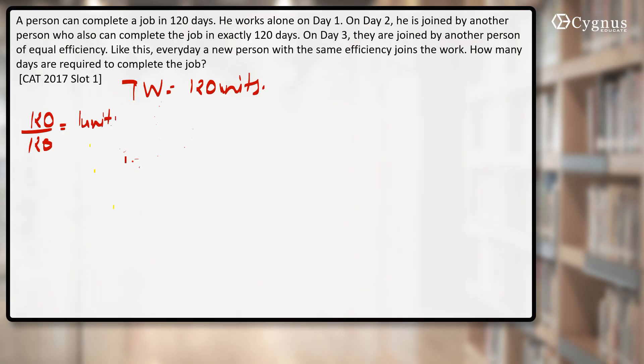Now how are they going to finish the job? On day one, the first person will alone do one unit. Day two, he'll be joined by another person of equal efficiency, that means the work done by them will become two units. Third day, one more person of the same efficiency joins them, that means the collective work for the third day will become three.